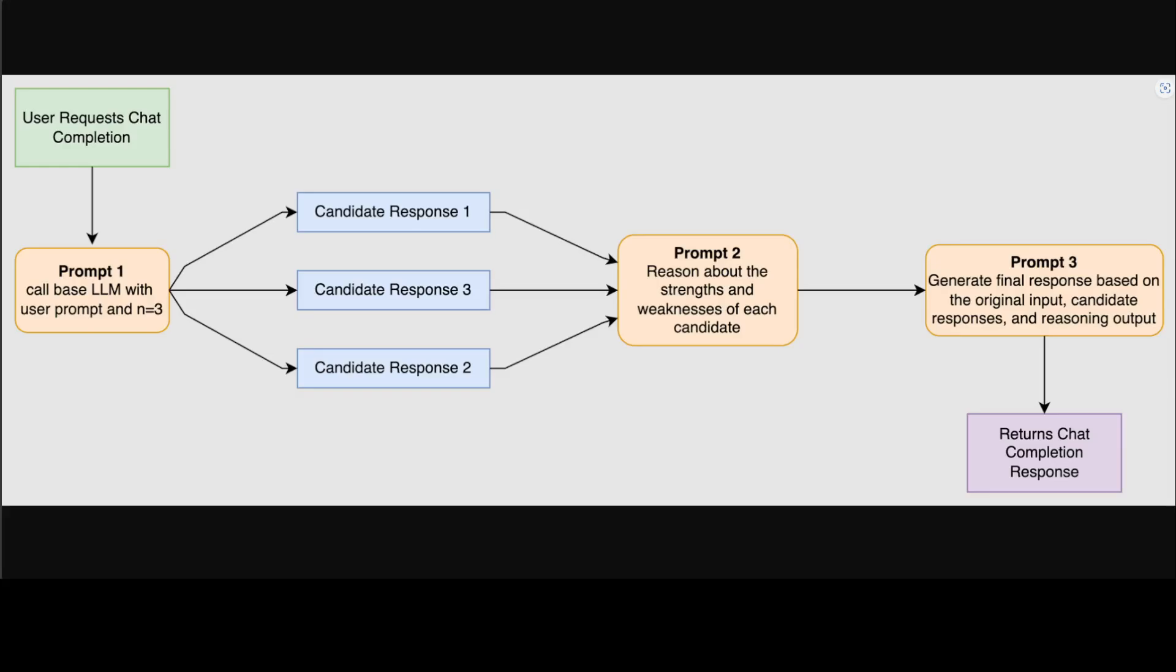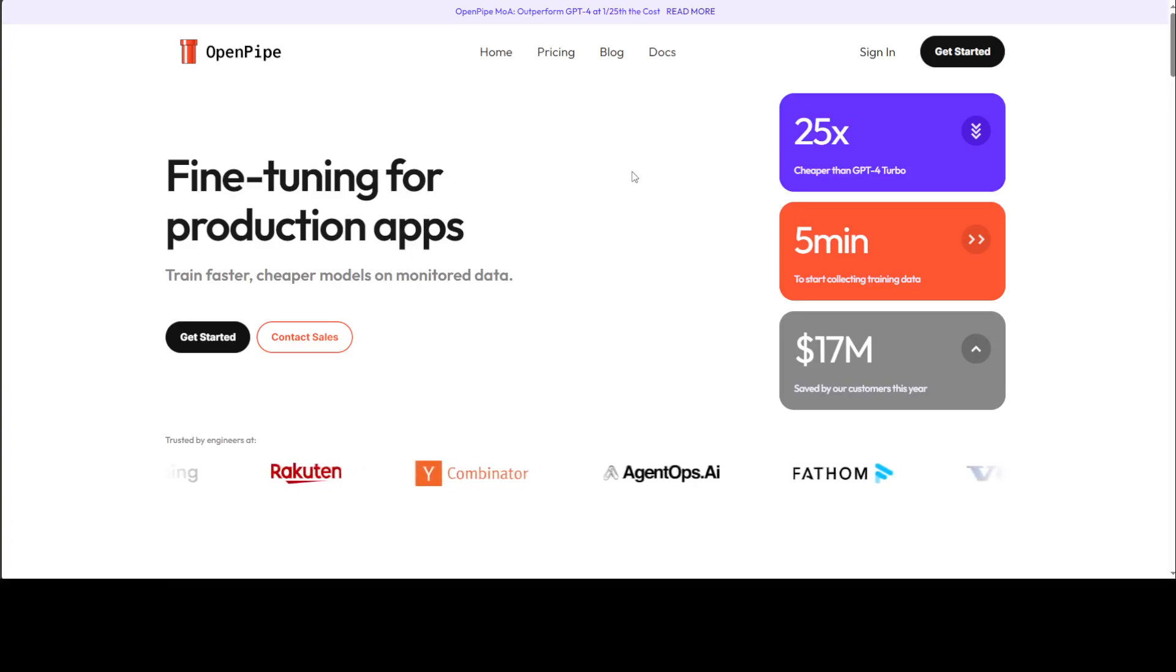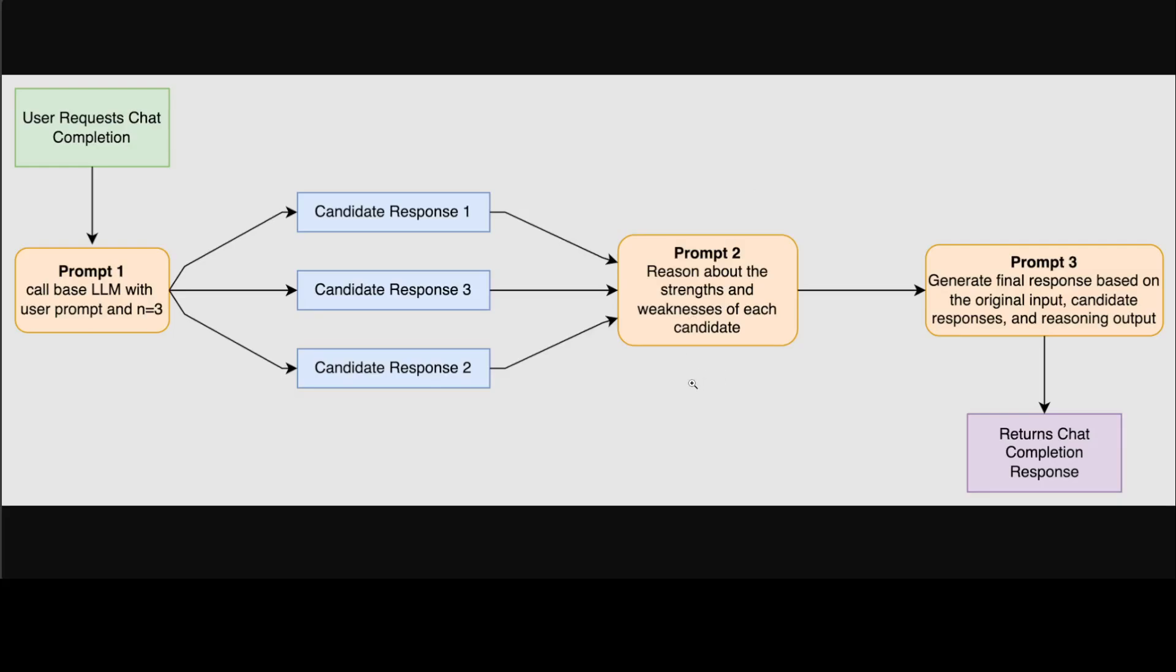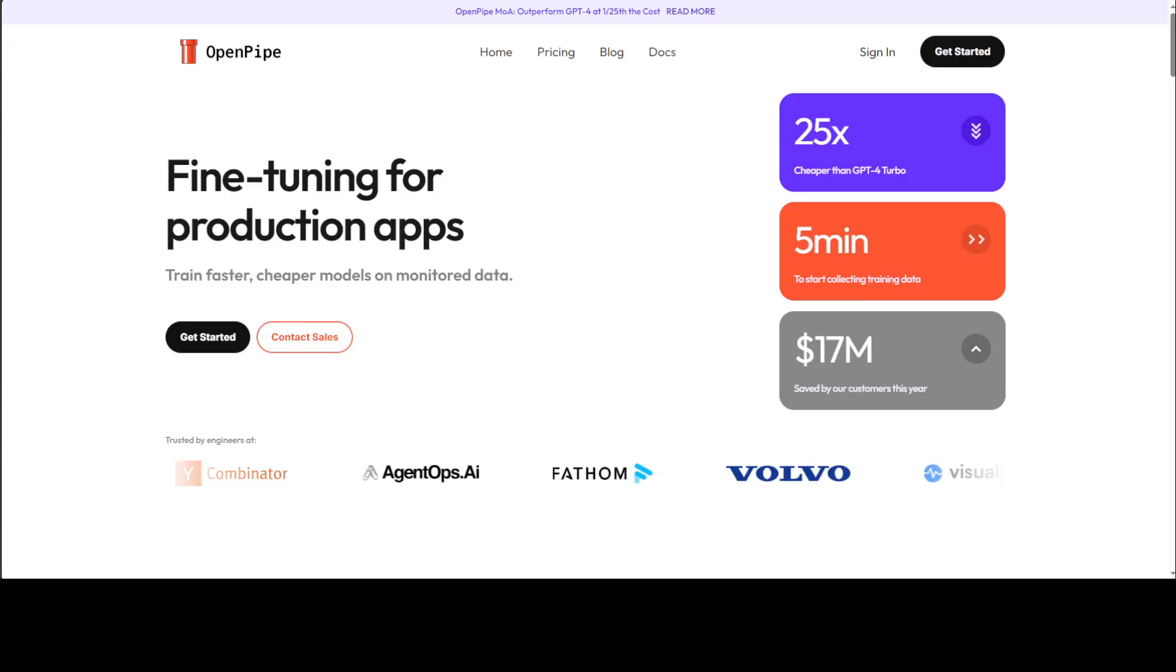So what is happening here is that this company OpenPipe has come up with a few mixture of agents model which are using this technique to provide you a better response, which is more quality oriented and which is more grounded.